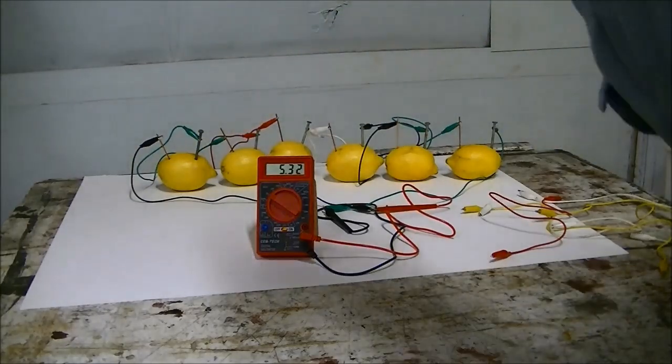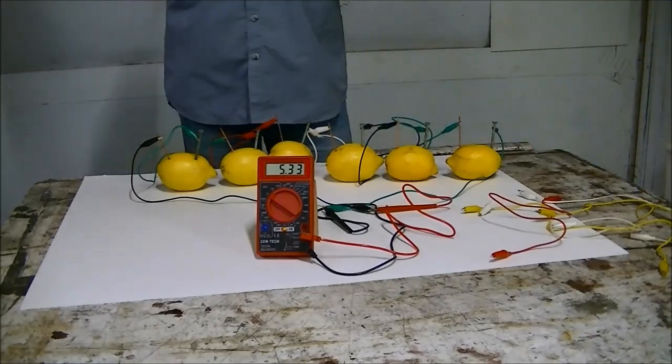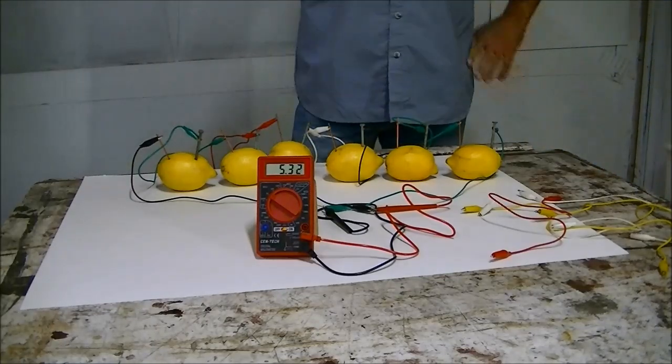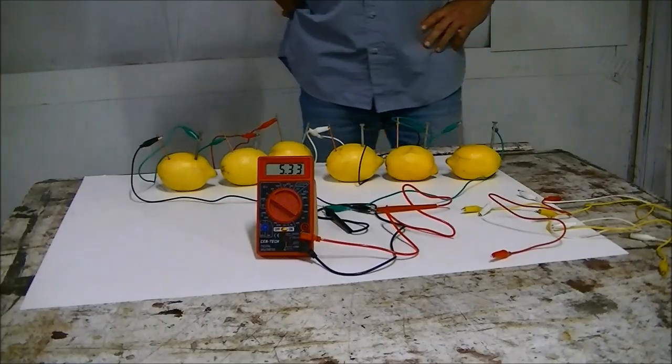So we got a total of 5.32 volts from six lemons. Next we're going to get all our paperwork done and I'll show y'all that at the end.